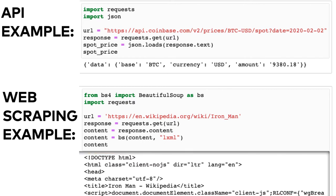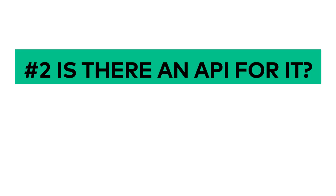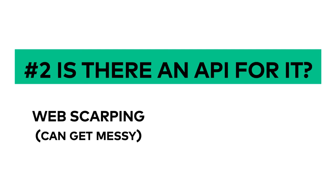Before you get started with web scraping, I recommend that you go through the API module first, because everything that you will learn there will make your web scraping skills better too. Since we are talking about APIs, sometimes web scraping can get tricky and come with headaches. You can avoid that if you find an API solution for the data you want to get. Take the Open Weather API as an example — you could scrape weather data from various pages and try to extract it with a lot of HTML tricks, but you can just hope that the website owners won't change the website structure and break your scripts. Or you can use the Open Weather API, where you will get a well-structured, bulletproof way to gather weather data with a few lines of code. The rule of thumb is: when there is an API solution for the thing you need, don't use web scraping.